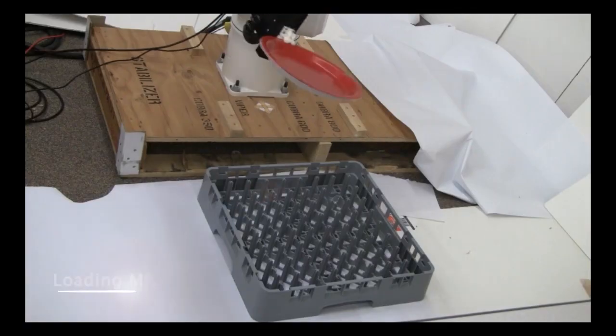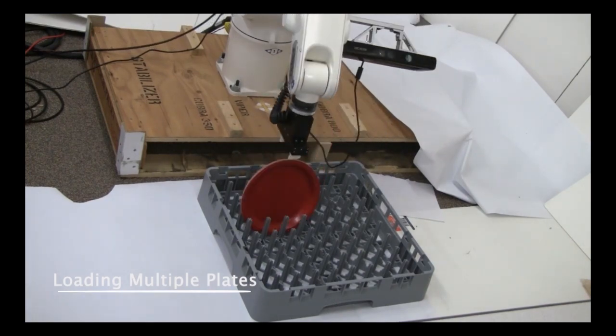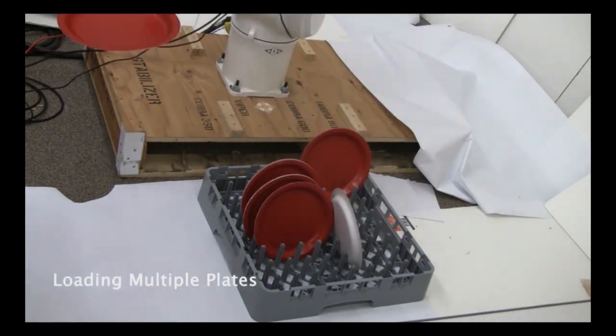We performed another task of loading two dish racks. In the first case, the robot loaded up to 16 plates onto one dish rack. All of them were placed vertically, and none of them collided with each other.